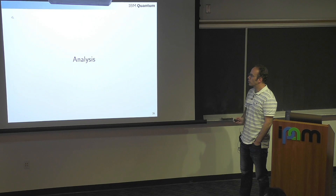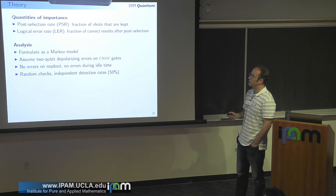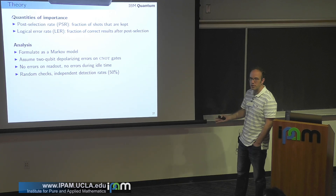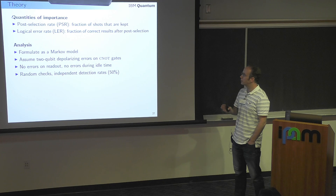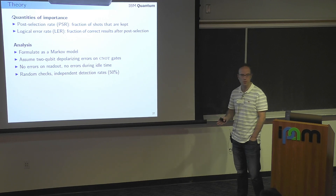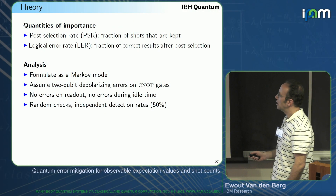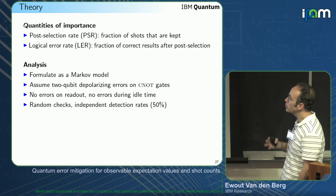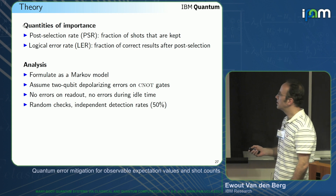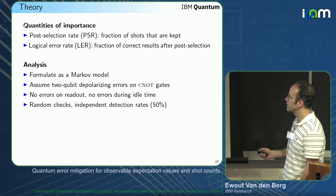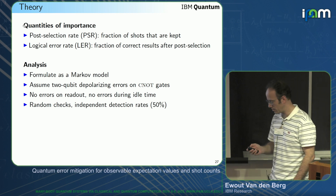The quantities of interest are the post-selection rate — what fraction of shots you keep — and the logical error rate, which is the fraction of correct results after post-selection. We can formulate this as a Markov model, assuming all two-qubit CX gates have depolarizing errors, no readout or idle time errors, and random Pauli checks giving an independent detection rate of 50%.